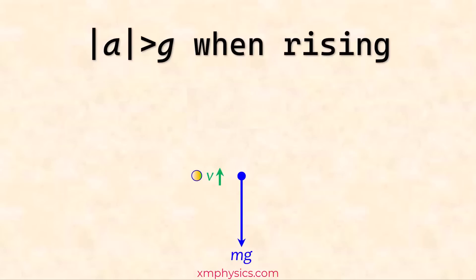So on the way up, the ball encounters a downward air resistance in the same direction as the weight. So the two will add up to give a net force that's larger than mg. So the acceleration is going to be more than 9.81 meter per second squared downward.